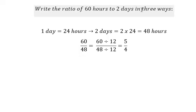Now, the question asks to write it in three ways. There are three ways. That is 5 to 4. The next one, 5 colon 4. And the last one, 5 over 4. And this is the technique to write the ratio.